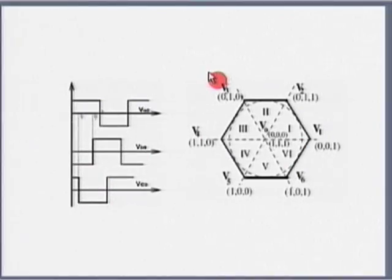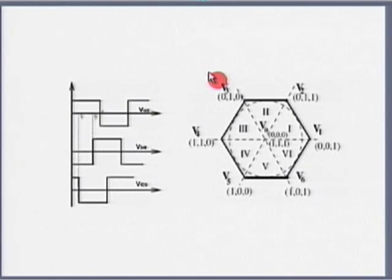If I take the Fourier series of this waveform, the harmonic spectrum is going to be 6n plus or minus 1. If I want a 50 hertz supply, the predominant harmonics are going to be 250 and 350 hertz; the 11th harmonic is going to be 650 hertz.